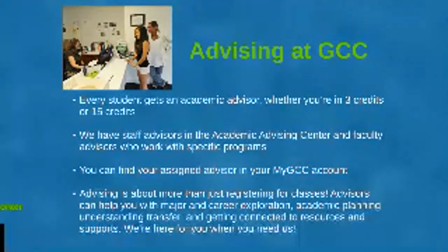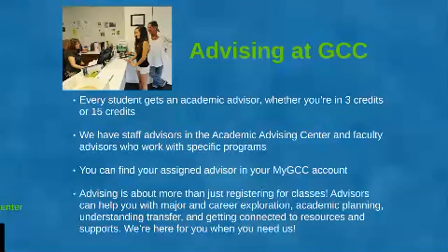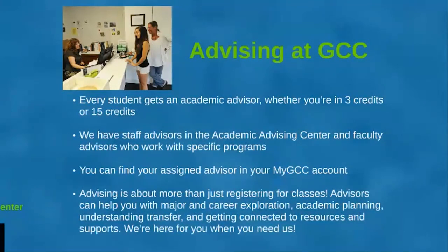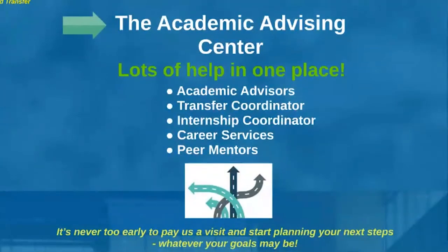Just a reminder: every student gets an academic advisor, no matter how many credits you're in. There are staff advisors in the advising center and faculty advisors who work with specific programs. You can find your assigned advisor in your myGCC account. Remember, advising is about more than just registering for your classes — they can help with major and career exploration, academic planning, figuring out how transfer works, and getting connected to resources and supports. The academic advising center houses advisors, the transfer coordinator, the internship coordinator, career services, and peer mentors all in one place.